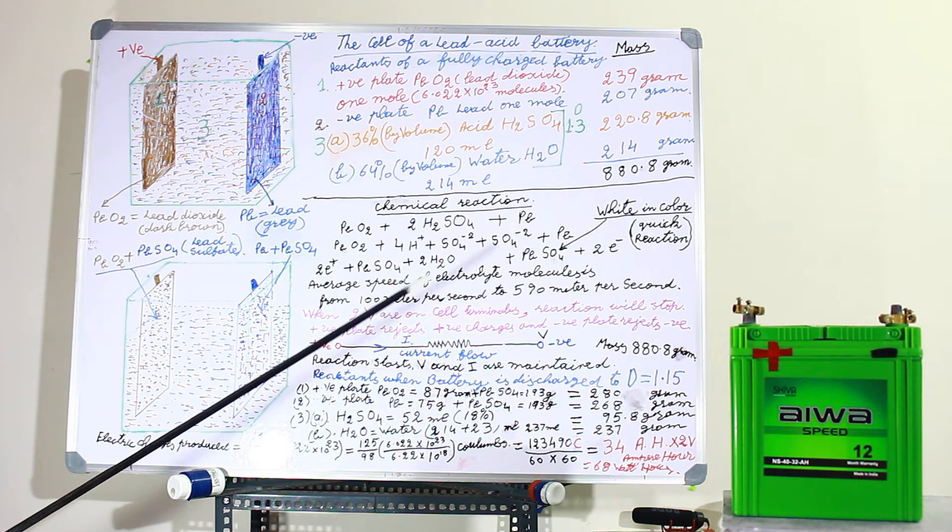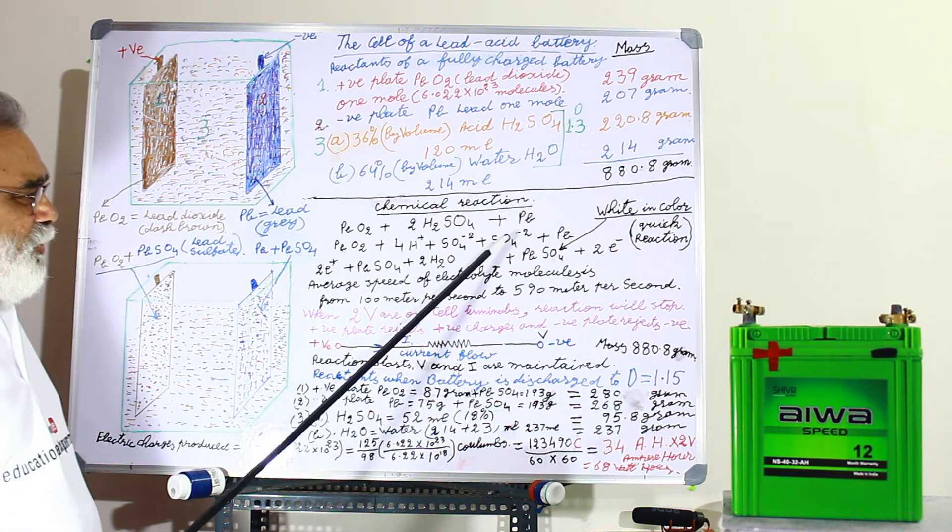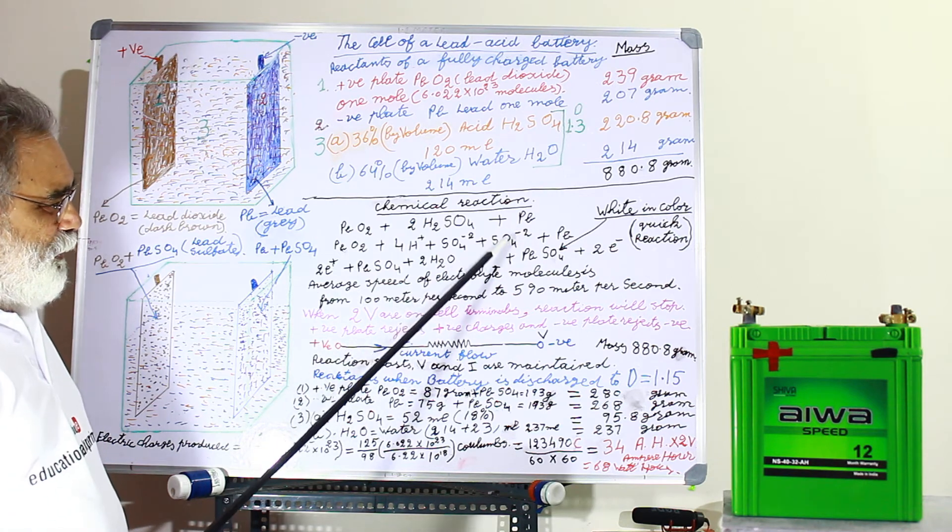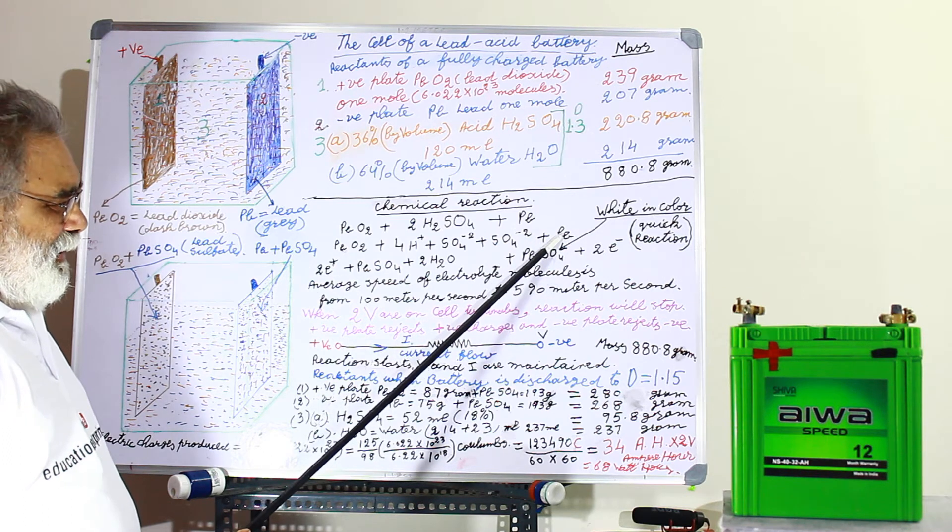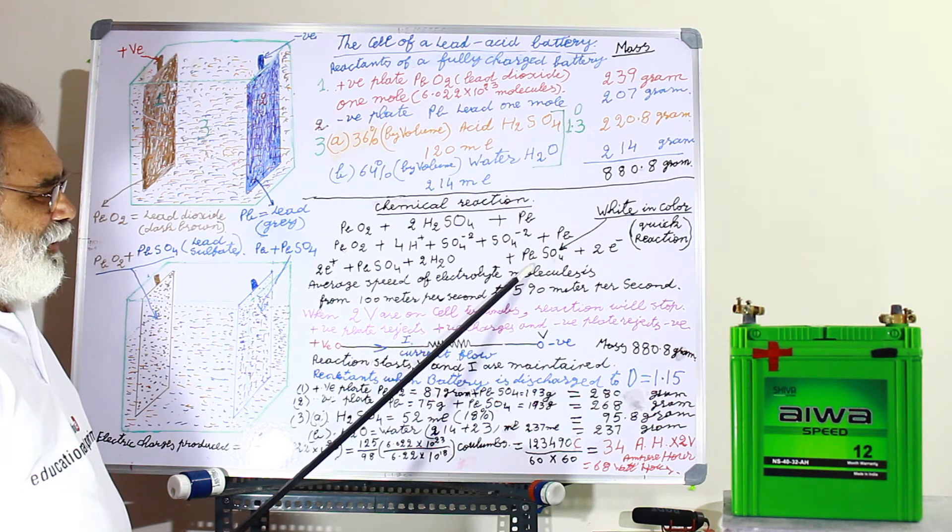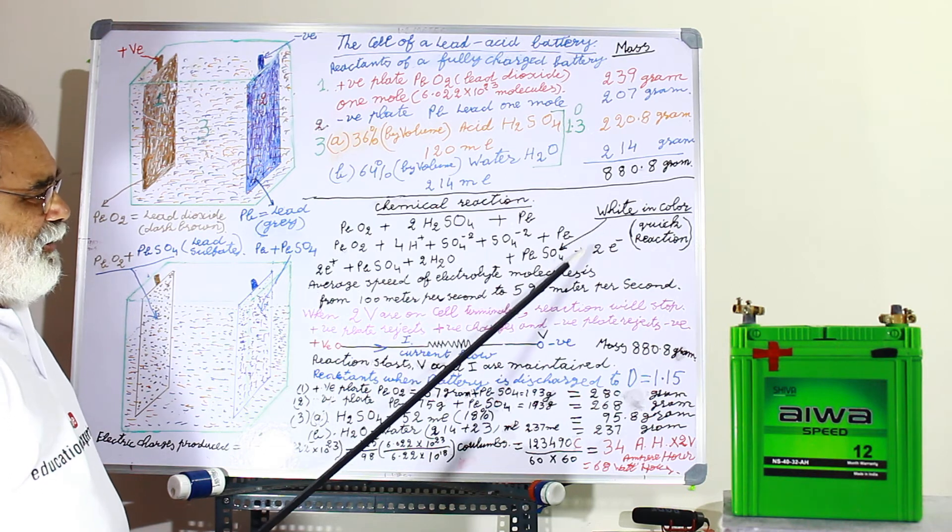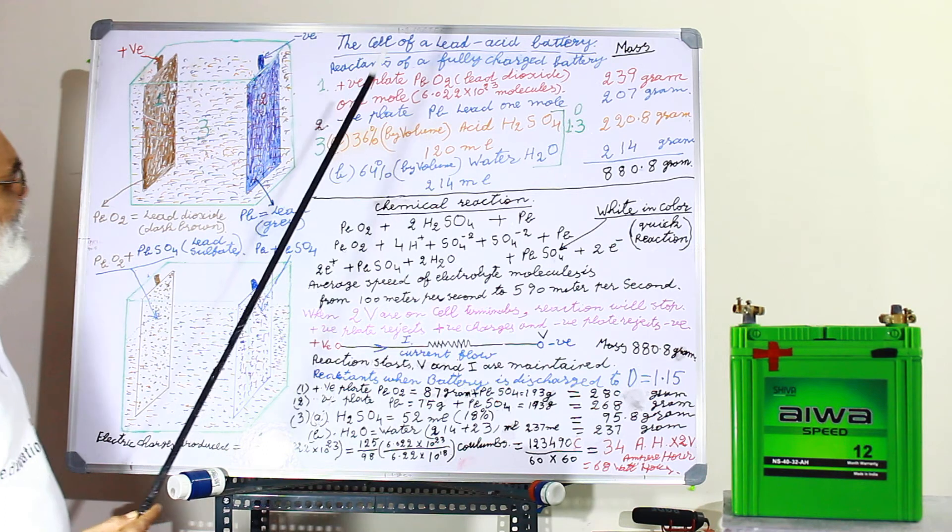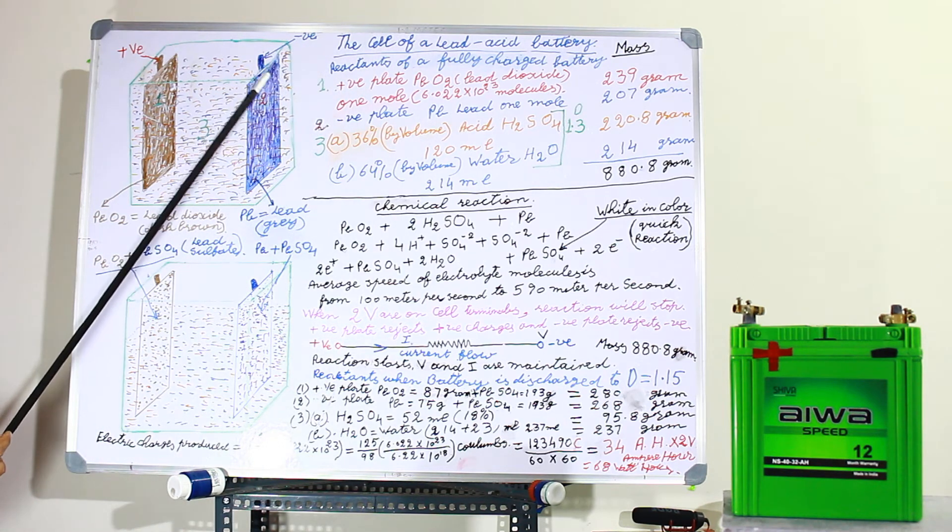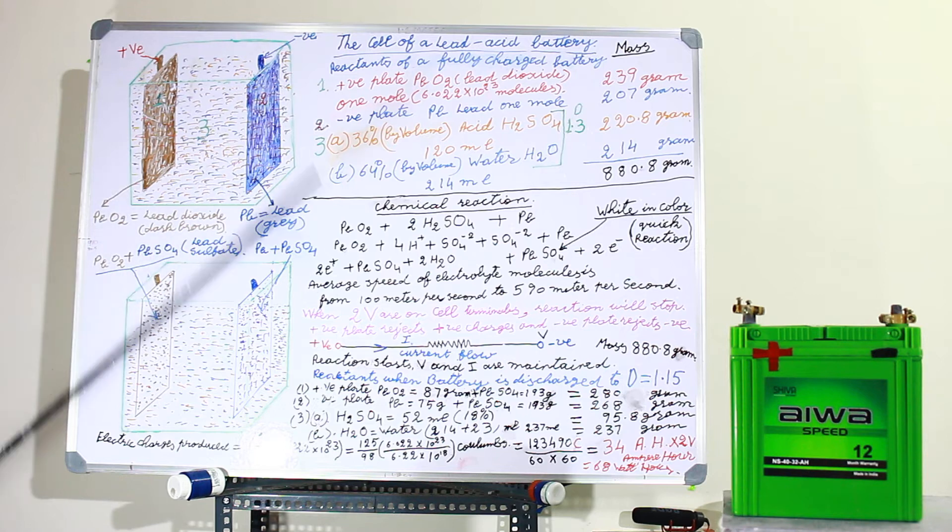And on the negative side, this sulfate is negatively charged. It will react with lead and it will also make lead sulfate. But there will be 2 extra charges, 2 electrons on the negative plate. These negative charges will charge the negative plate.